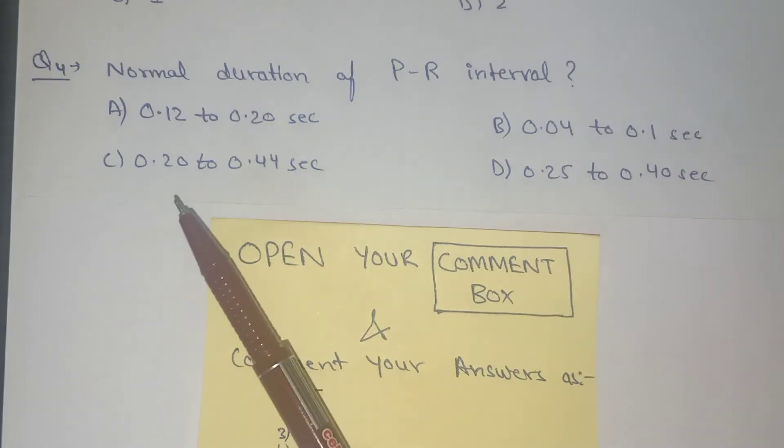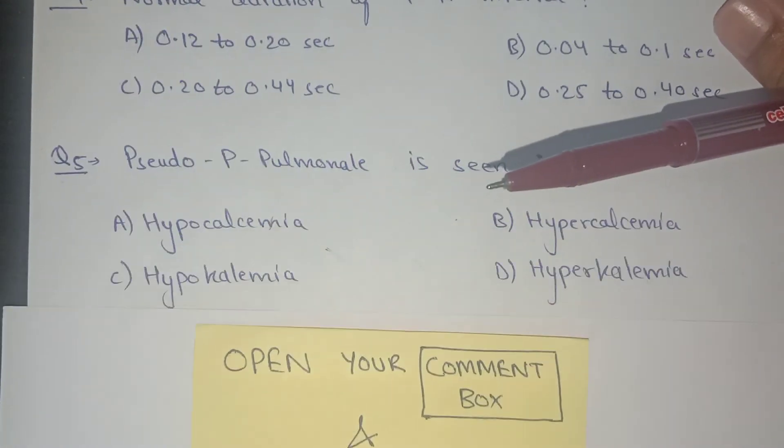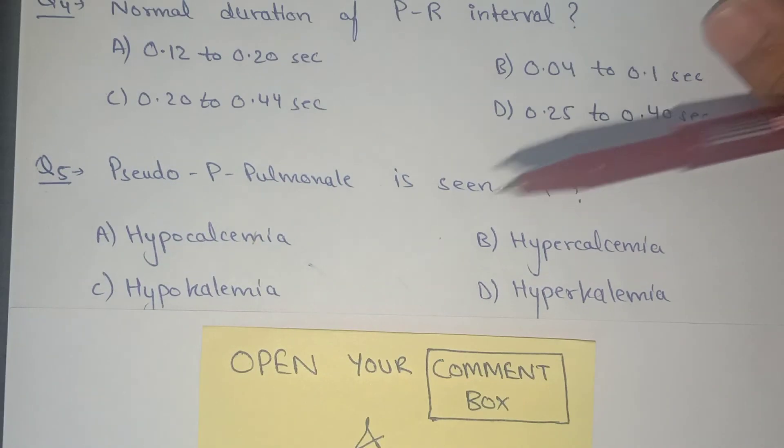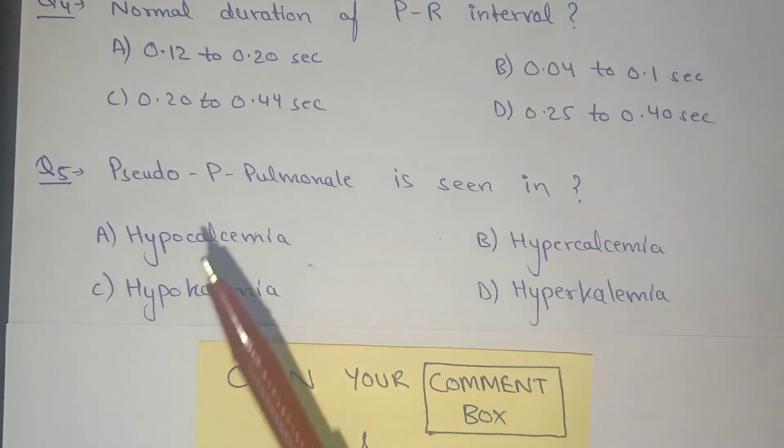C) 0.20 to 0.44 second, D) 0.25 to 0.40 seconds. The last question is: Pseudo P pulmonale is seen in? Options are: